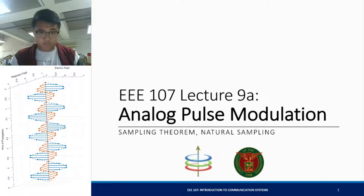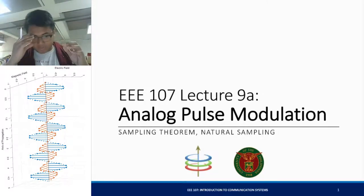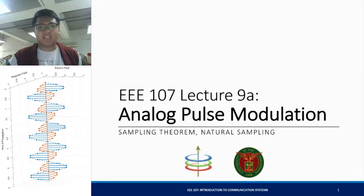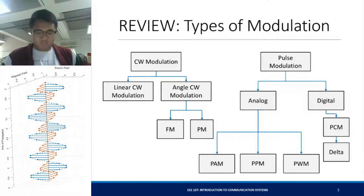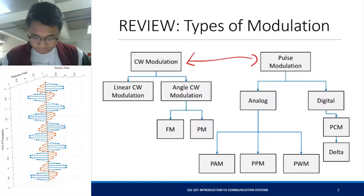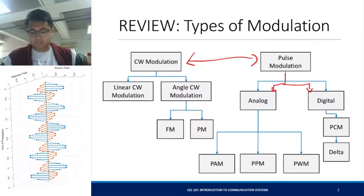In this lecture, we'll be talking about their properties and how they behave in the frequency domain. So these are the types of modulation: continuous wave and pulse modulation. For pulse modulation, we have analog pulse modulation and digital pulse modulation.